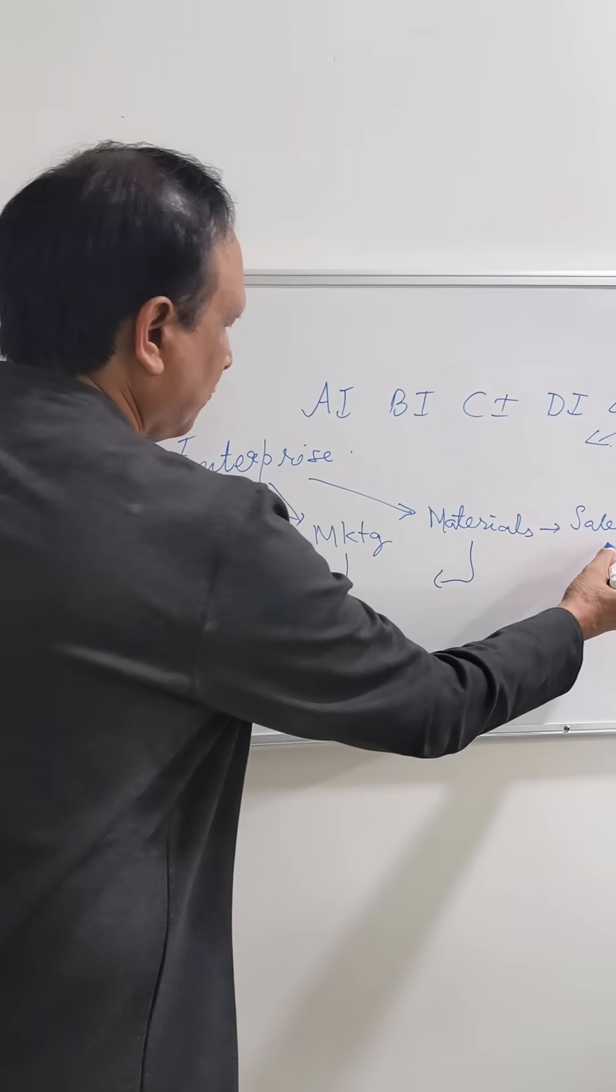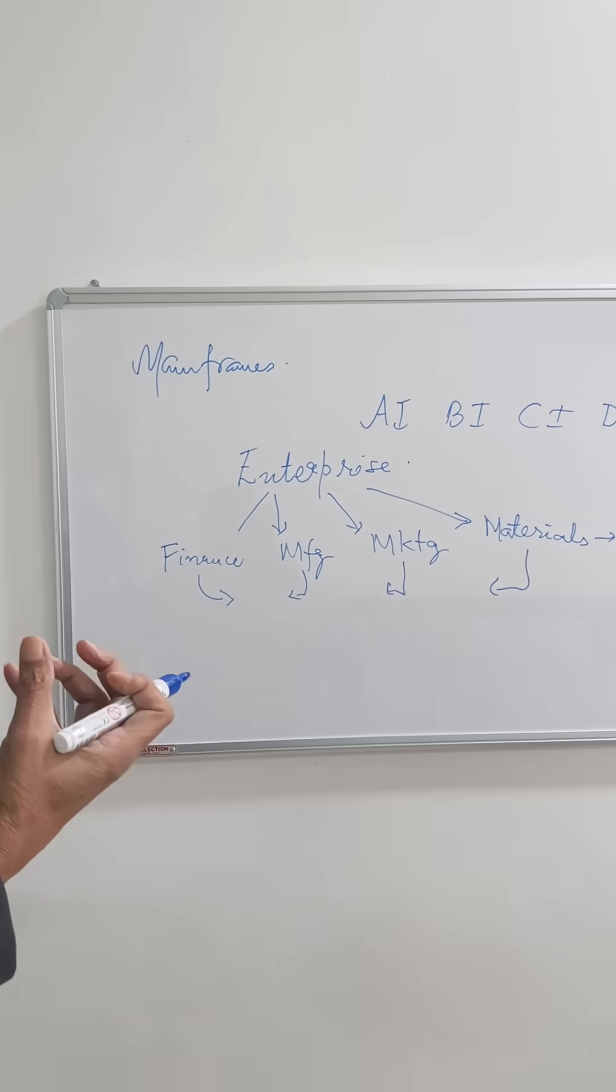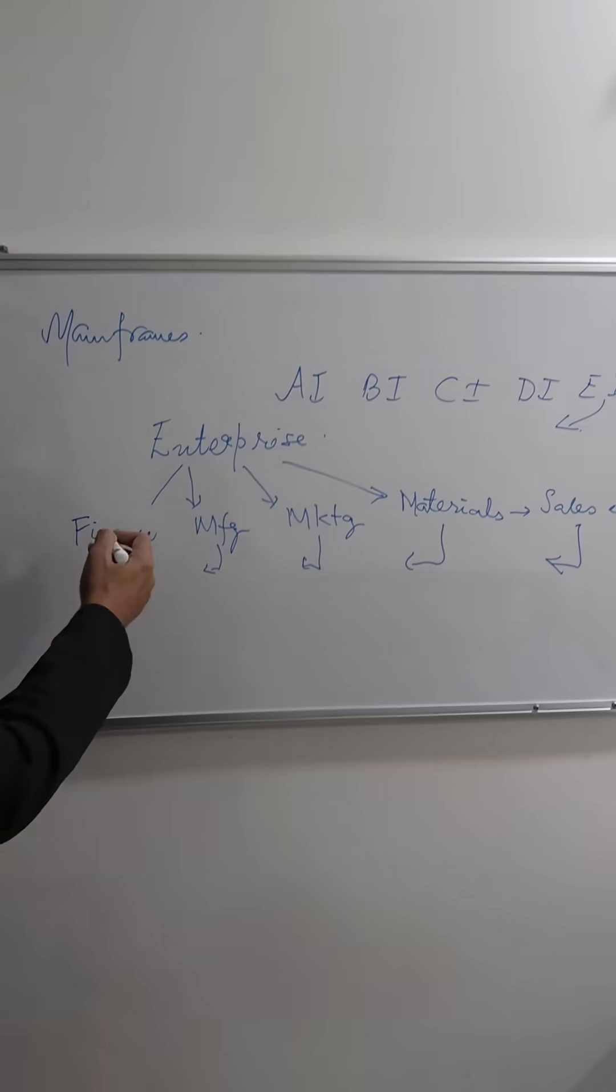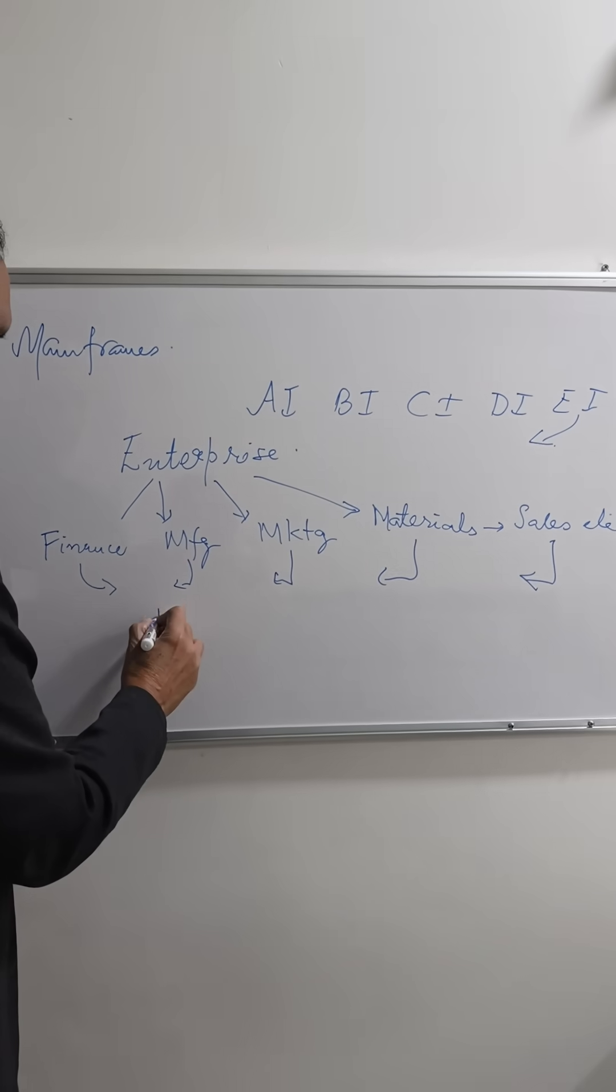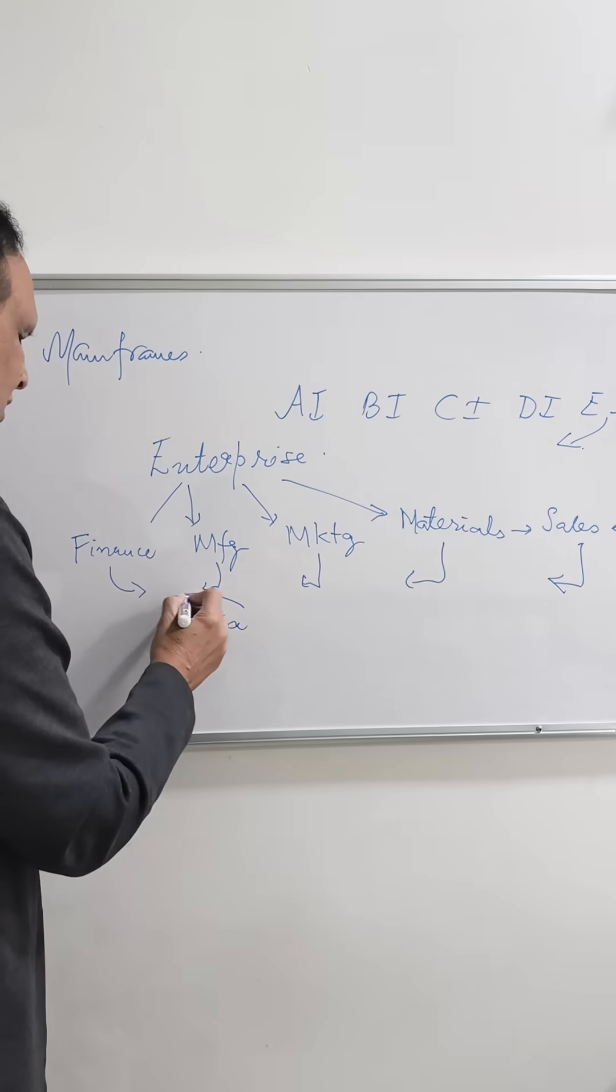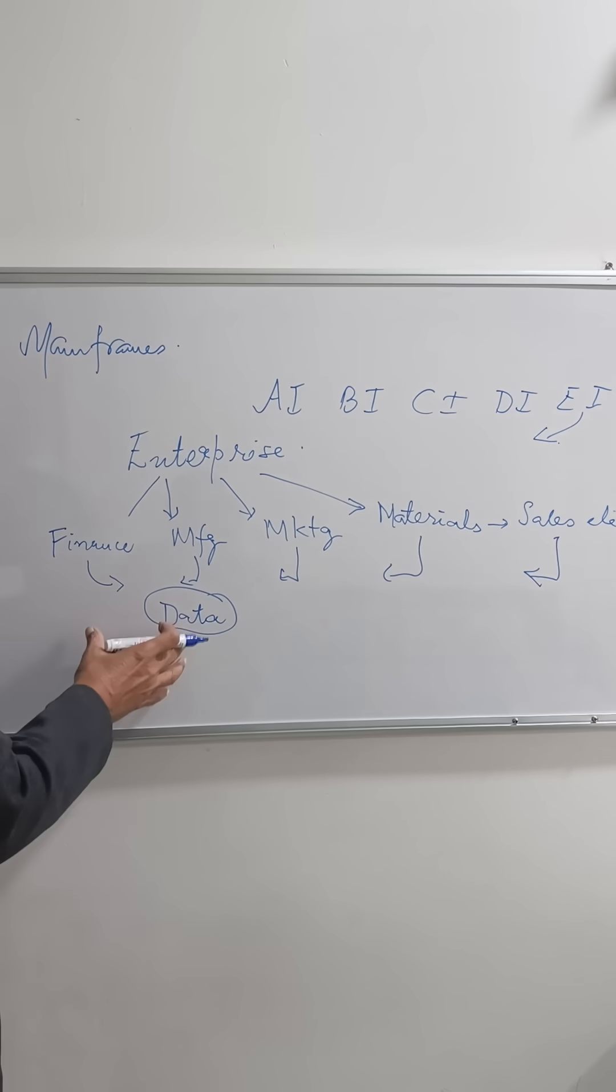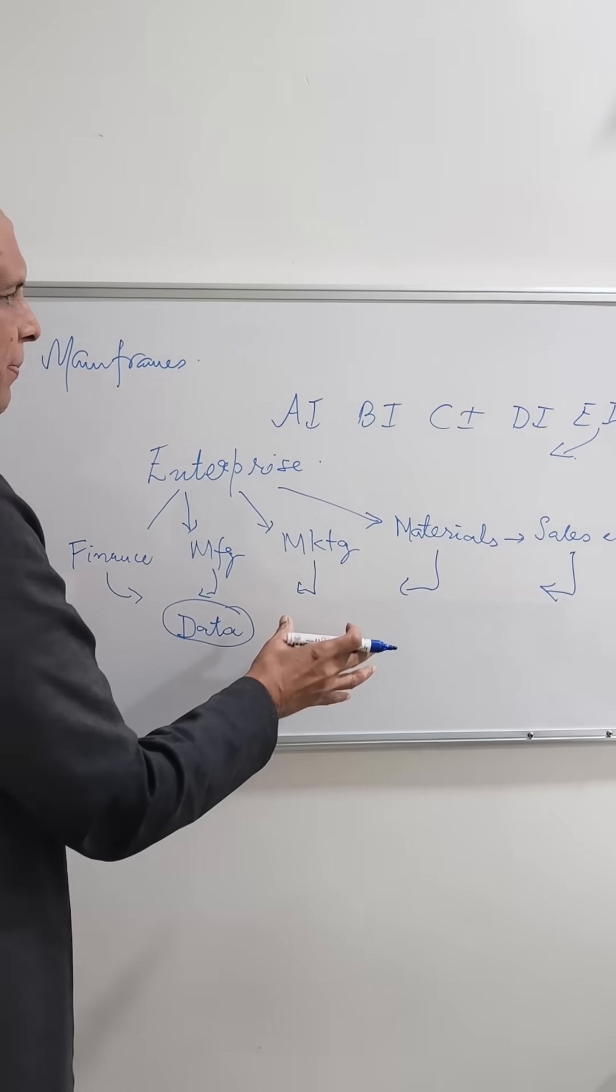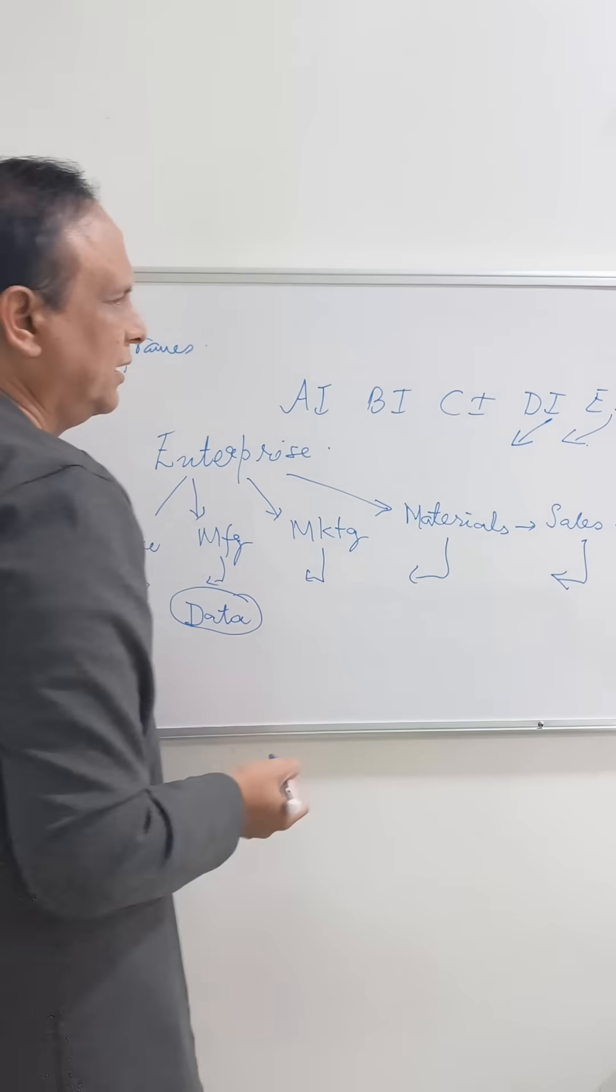So when they are working on certain functionalities, what is the crux for them to do the particular communication between the departments? What is the main thing that has added value? That is nothing but your data. So unless there is data, all these departments will not work together, right? So there is a data percolation between the different departments. And that's where exactly we have come up with data integration.